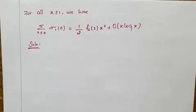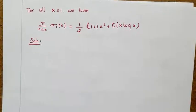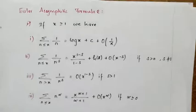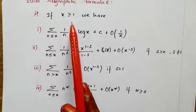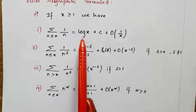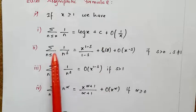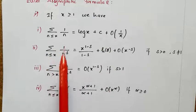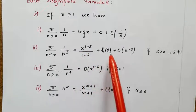Hello everyone. In this video we will solve this problem using Euler's asymptotic formulae. First, the four formulae: if x ≥ 1, then sum over n ≤ x of 1/n = log x + C + O(1/x). The second formula is sum over n ≤ x of 1/n^s = x^(1−s)/(1−s) + g(s) + O(x^(−s)) for s > 0 and s ≠ 1.